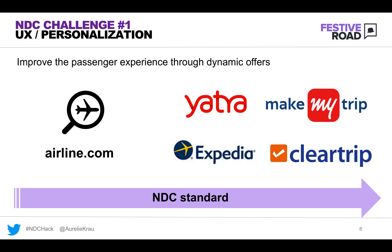You have probably noticed that you don't always have the same offer and the same level of information available, whether you're shopping on airline.com, a travel agency, or a metasearch. That's the whole point of new distribution capability, also called NDC. The NDC standard reduces the gap between direct and indirect channels by enabling intermediaries to aggregate content from airlines via their APIs and by enabling airlines to display their full portfolio of products to passengers who shop online. I really encourage you to take a look at the NDC documentation to get more familiar with the standard.